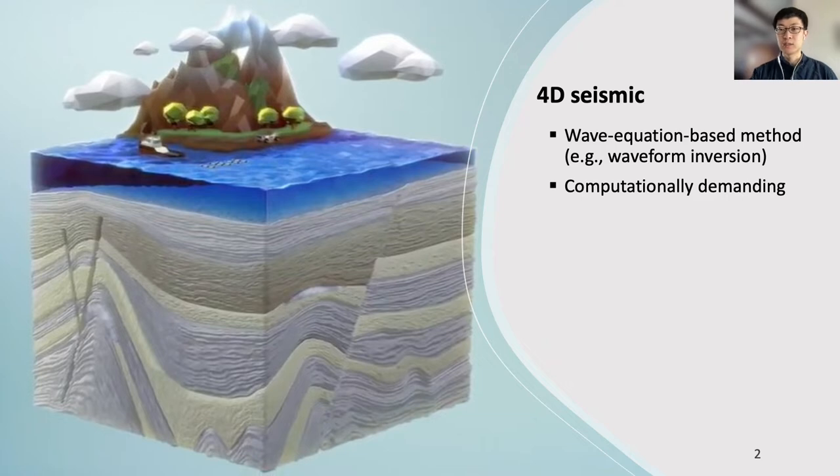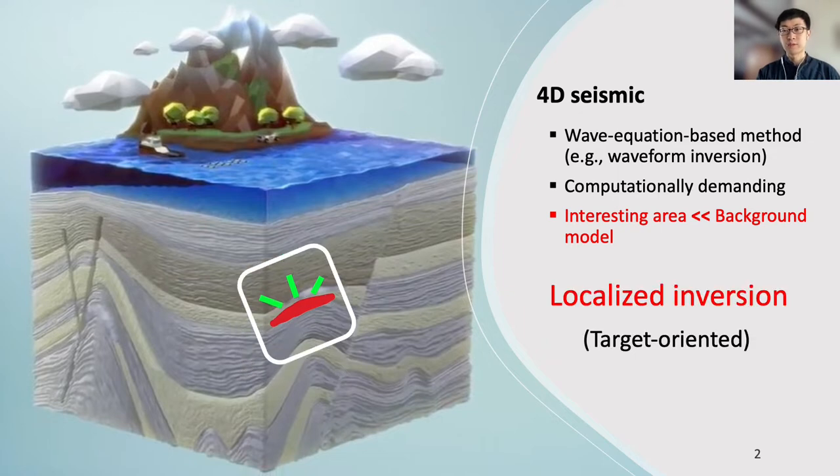In fact, during time-lapse surveys, our target area is normally much smaller compared to the full background models. Therefore, performing waveform inversion only within the target area can be particularly useful for the numerical cost reduction.